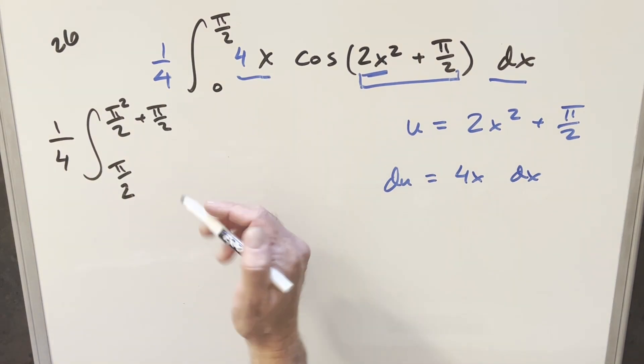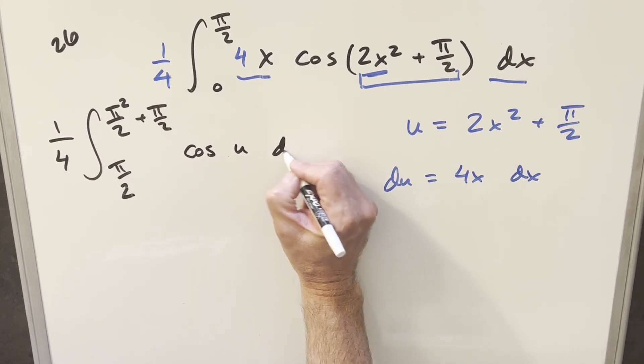Then substitute this. This here is just going to simplify all the way down to cosine of u, and everything else is just going to be du.